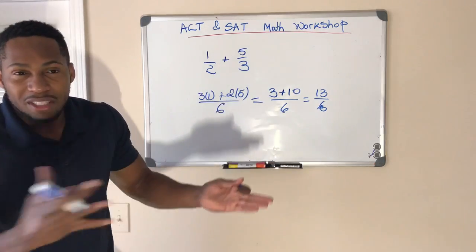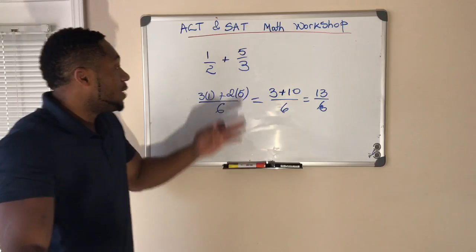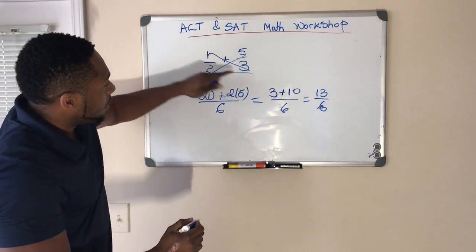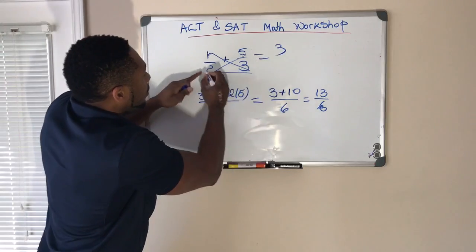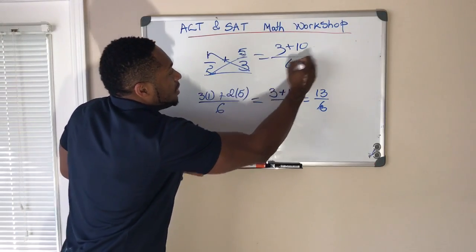And sometimes there's probably a faster way. Let me show you something incredible: two times one is two, two times three is six, one times three is three, two times five is ten, thirteen over six.